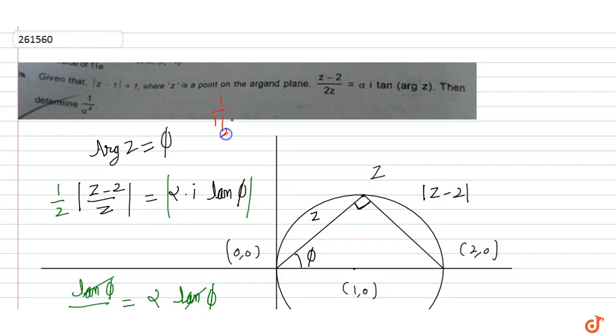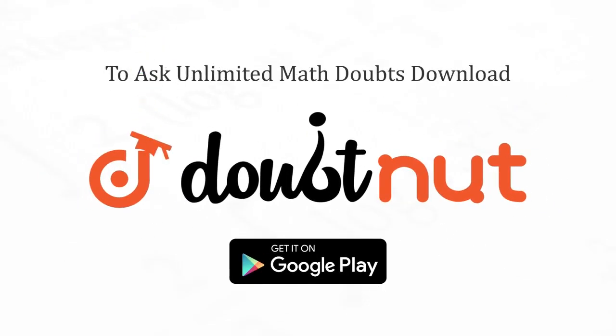Now we have to find 1 upon alpha power 4 value. So 1 upon alpha power 4, what do we want to do? 1 by 1 by 2 power 4, which is equal to 16. The answer for this question is 16.